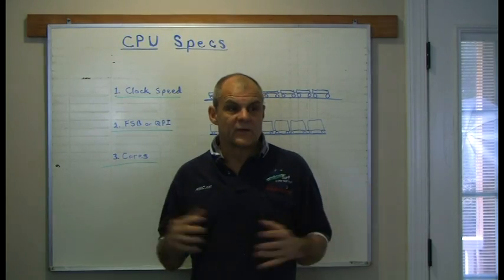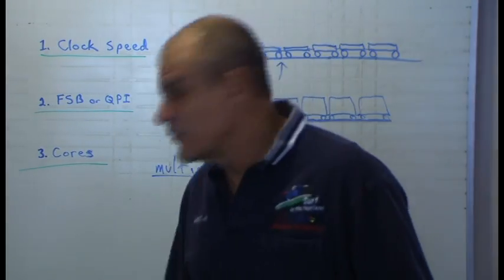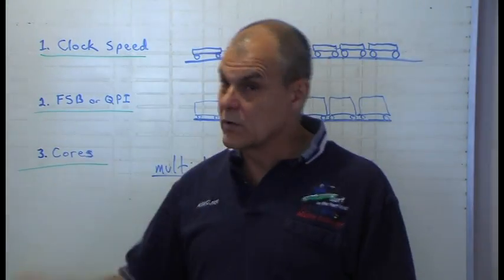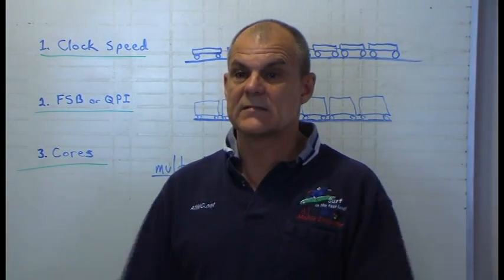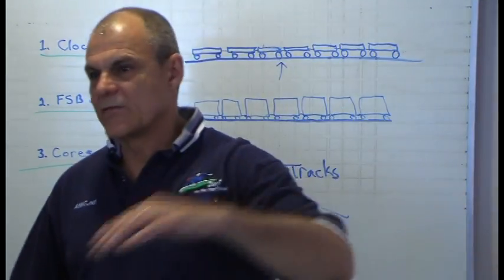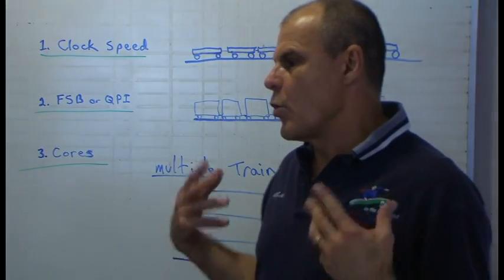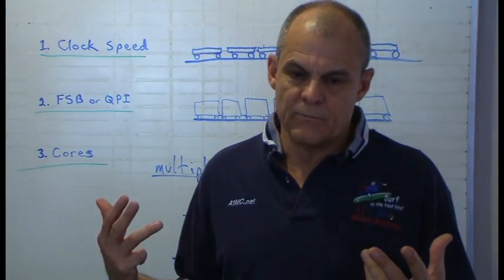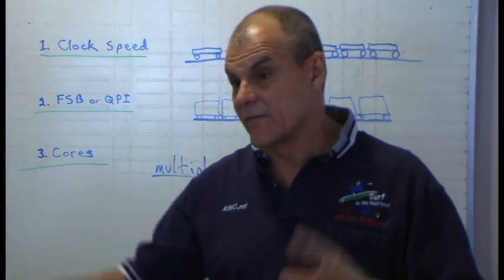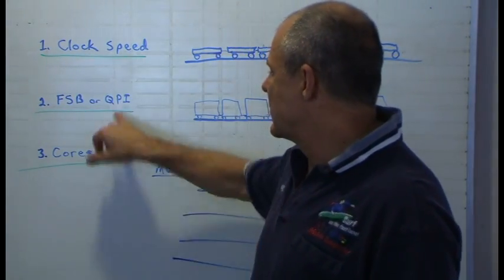The last specification is the number of cores, which is like how many trains you have running. If you have a Core 2, you've got two train tracks running instead of one. Cores is extremely important — you can double your processing power just by going to dual core. We were on single core for many years, all the way through the 386, 486, Pentium 1, 2, 3, and 4. Then we went to Core 2, and then quads. Quads are more powerful than a Core 2, and you can think of it as four cores.